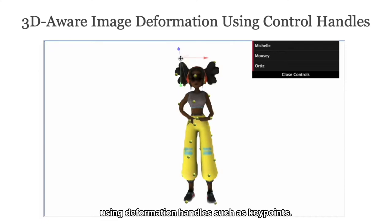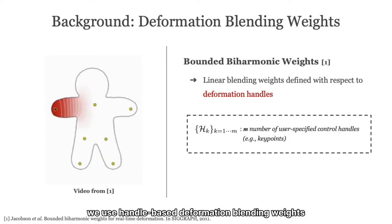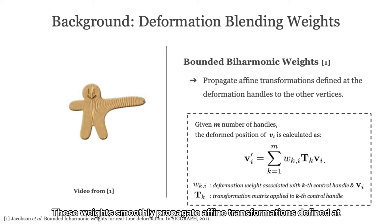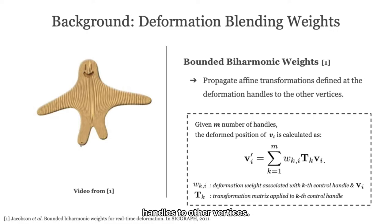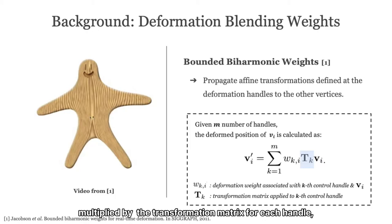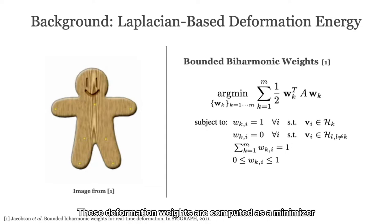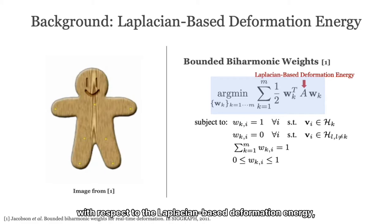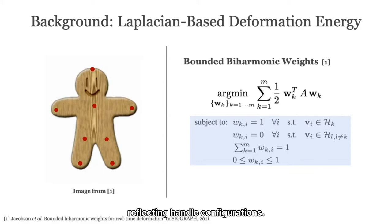To model such intuitive deformations, we use handle-based deformation blending weights computed from the 3D reconstruction of the object in the image. These weights smoothly propagate affine transformations defined at handles to other vertices. Given n number of handles, the deformed position of the i-th vertex is calculated as the summation of the deformation weight multiplied by the transformation matrix for each handle, applied to the original vertex position. These deformation weights are computed as a minimizer with respect to the Laplacian-based deformation energy, subject to several constraints to guarantee desired properties of deformation, reflecting handle configurations.